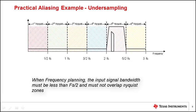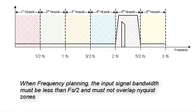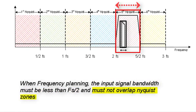There are two things that should be kept in mind when frequency planning for using aliasing. First, the input signal's bandwidth should be less than half the sampling rate. And secondly, the signal should completely fit in single Nyquist zone. That is, signal should not overlap two Nyquist zones.